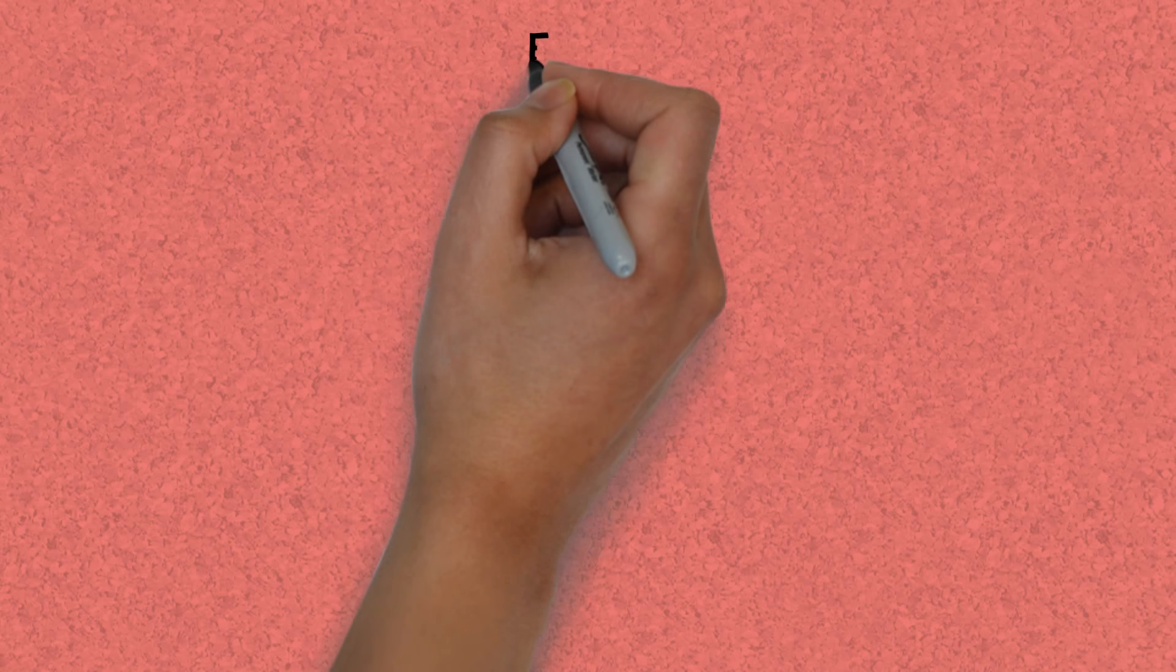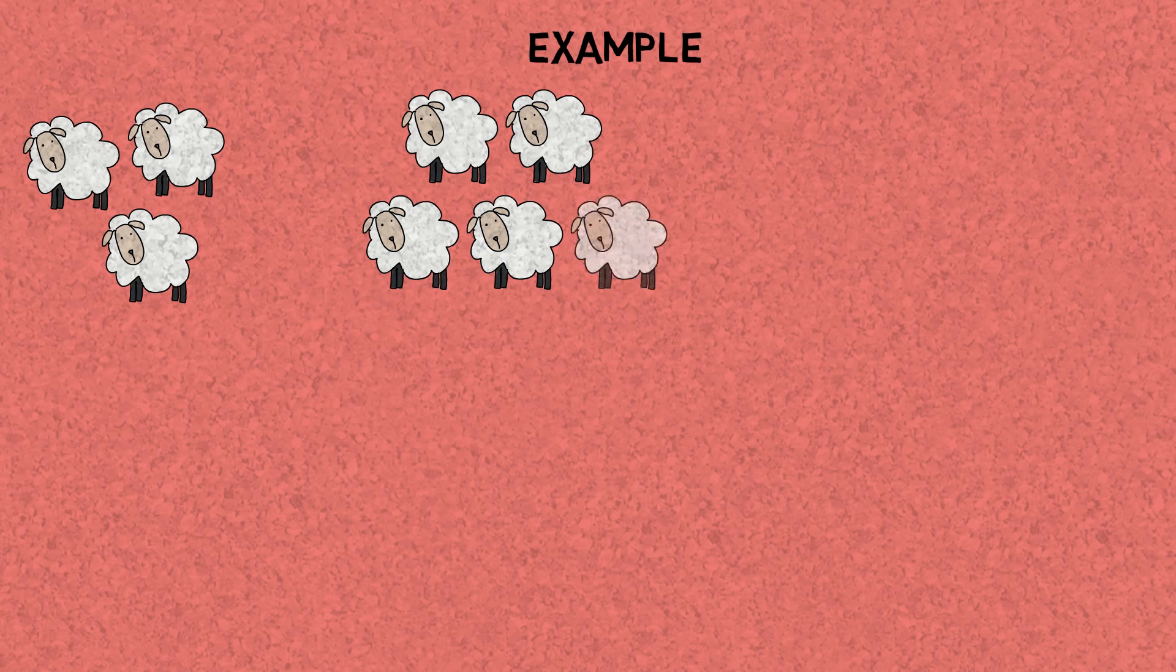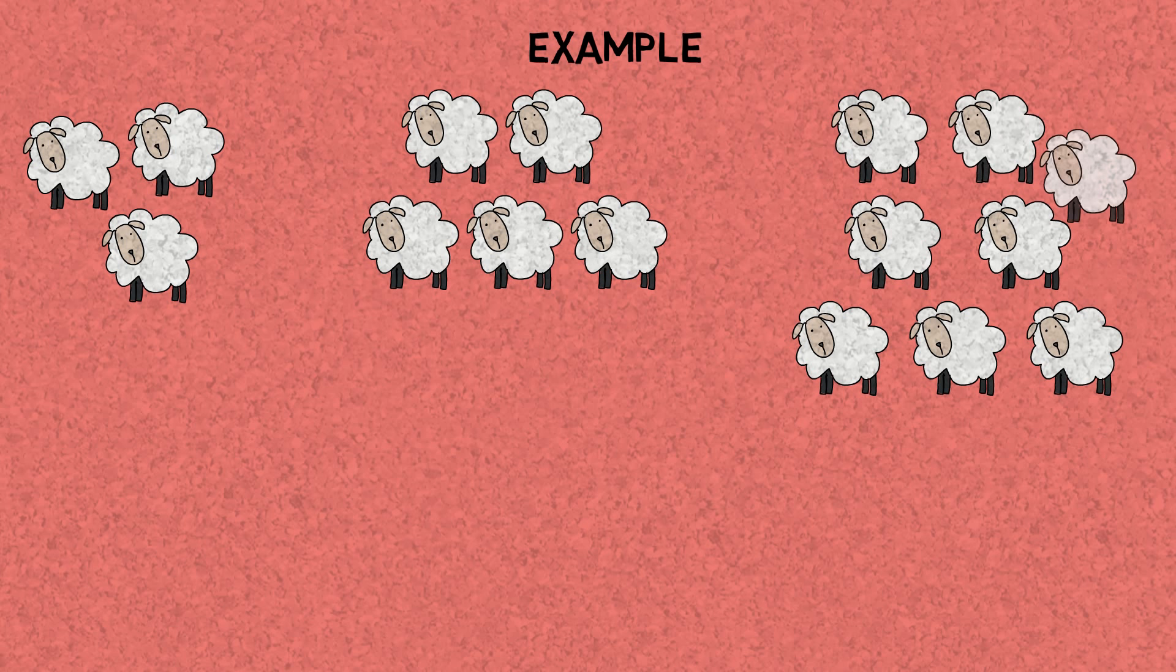Let's have a look at the example where we add quantities together. John has three sheep, Alan has five sheep. Suppose they were mixed together by accident, so the total will be three and five which is eight sheep.